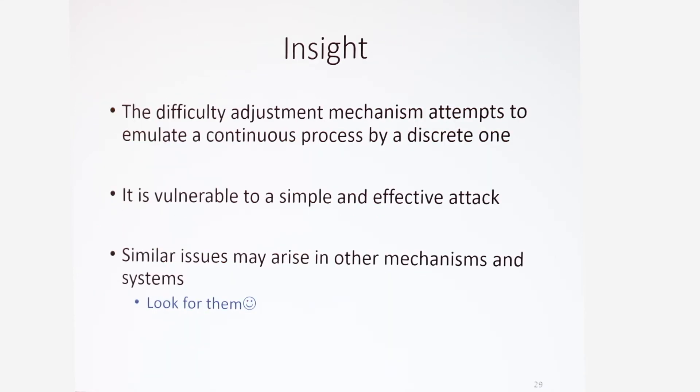To conclude, the ideal difficulty adjustment is a continuous process. The actual mechanism tries to emulate it using a discrete one. The result? They are vulnerable. Is this inherent? We're not sure. But we do believe that similar issues are likely to arise in other systems that are trying to emulate continuous processes by discrete ones. Since this is a very, very delicate issue. And, as you know, in real-world systems, they don't really pay that much attention. Thank you for listening.